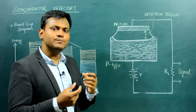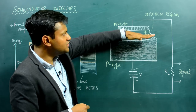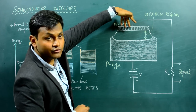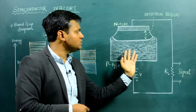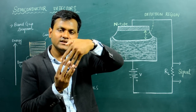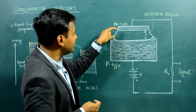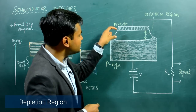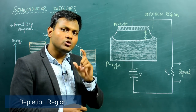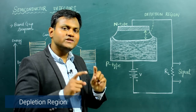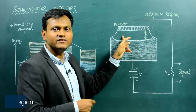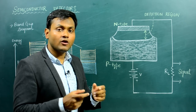In a P-N junction diode, there is something called a depletion region. Along the junction between the P-type and N-type material, the majority charge carriers in N-type — which are electrons — can diffuse into the P-type, and the holes, which are the majority charge carriers in P-type, can diffuse into the N-type. When these opposite charges diffuse into each other, they recombine in a very small region and create what is known as a depletion region. The depletion region is that region in which electrons from the N-type and holes from the P-type diffuse and recombine to create a neutral region — there are no free electrons in the conduction band and no holes in the valence band. It is free from any kind of charge carrier.